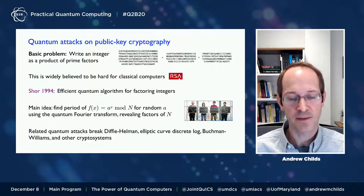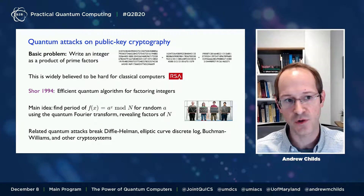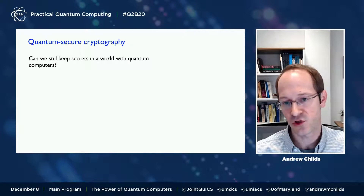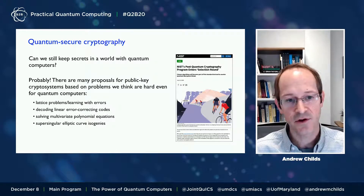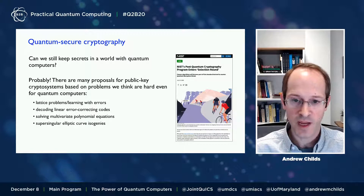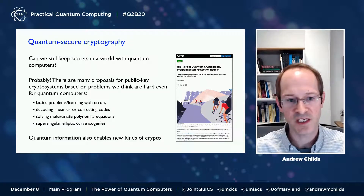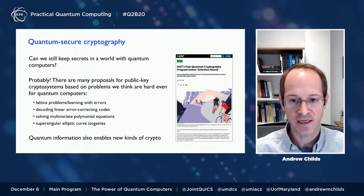Related ideas give polynomial time quantum attacks on other public key cryptosystems, including the elliptic curve discrete log problem and other proposals for public key cryptography. You might wonder whether it's possible to do cryptography at all in a world with quantum computers. The answer is that we expect yes — there are many proposals for public key cryptosystems based on problems we think are hard even for quantum computers. There's an effort underway by NIST, the National Institute of Standards and Technology, to develop cryptographic standards secure even once quantum computers are built. Quantum information also enables new kinds of uniquely quantum mechanical cryptography that cannot be carried out in the classical world.